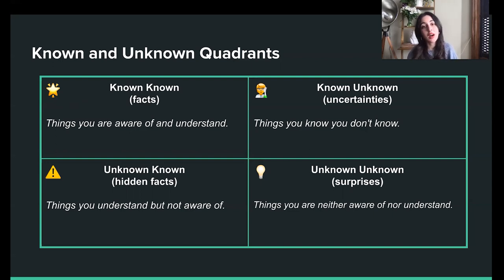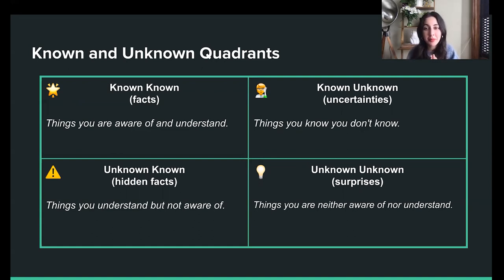In the bottom left, we have unknown knowns — we could call it hidden facts or blind spots. Things you understand but are not aware of — in another word, ignorance. Frankly, this is a dangerous zone to be in and should be minimized as much as possible for a successful outcome. In the bottom right, we have unknown unknowns — we could call it surprises. Things you are neither aware of nor understand. It's an unexpected discovery in uncharted territory.